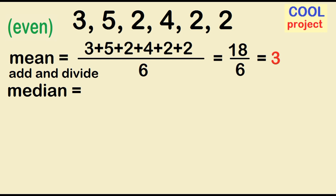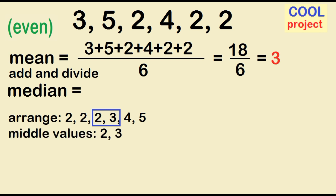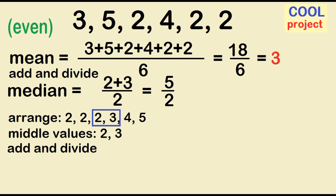To find the median, arrange the data values: 2, 2, 2, 3, 4, 5. The middle values are 2 and 3. To find the median, just add the middle values and divide by 2. 2 plus 3 divided by 2 is 5 over 2, which is equal to 2.5.